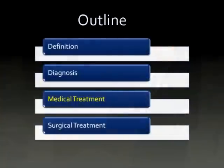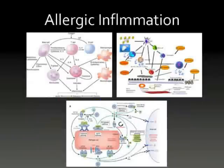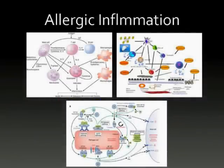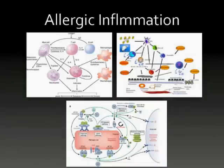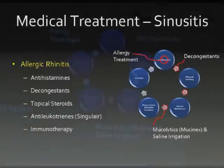How do we treat sinusitis? We have medical treatment and surgical treatment. For allergic inflammation, the treatment framework is complex - we don't fully understand what's going on. We want to stop allergic inflammation with allergy treatment, sometimes add a decongestant like Claritin-D with pseudoephedrine, and use mucolytics like Mucinex or guaifenesin.